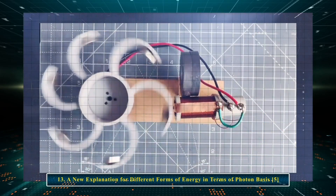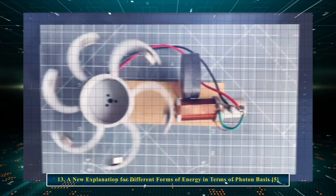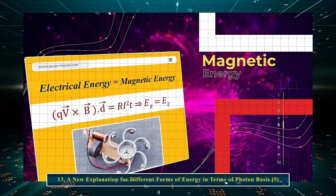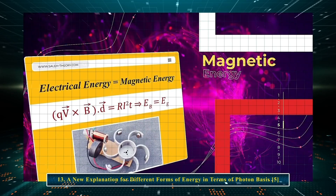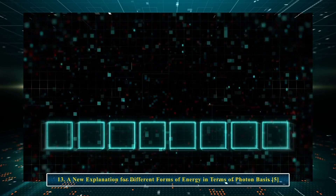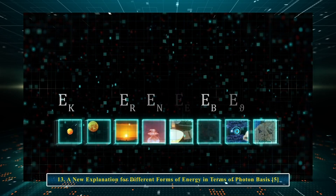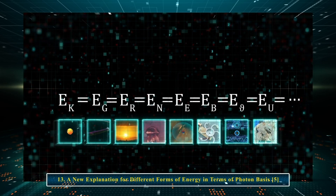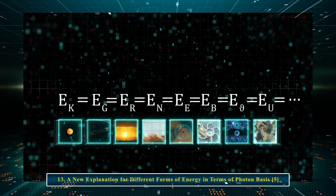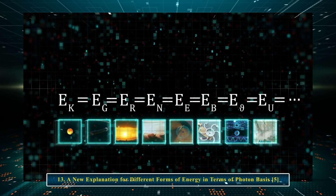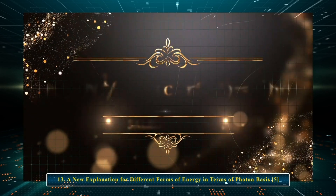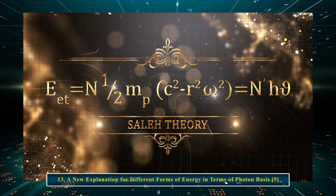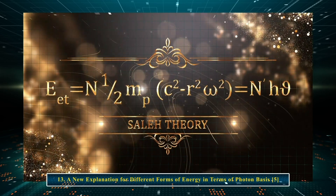Due to the fact that in transformers, magnetic energy is always converted into electrical energy, electrical energy equals magnetic energy. Therefore, it can be said that all energies are equal, equivalent and identical. We can write the following comprehensive relation, which we named the Saleh Comprehensive Equation of Theory of Everything, or the equation of the primary energy chart since the Big Bang till now.